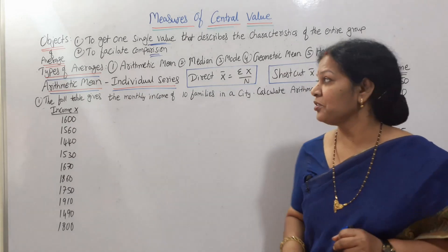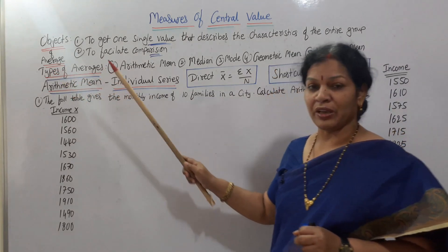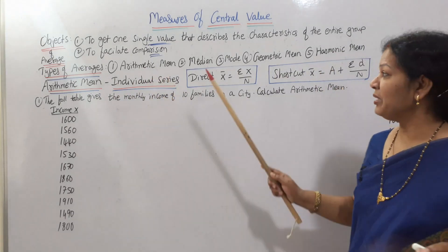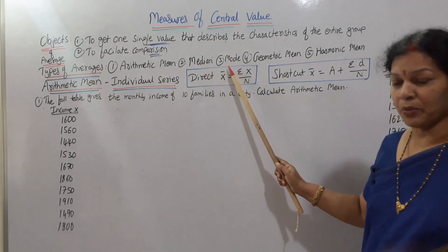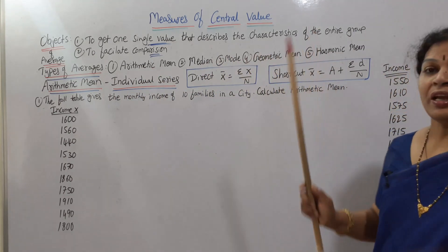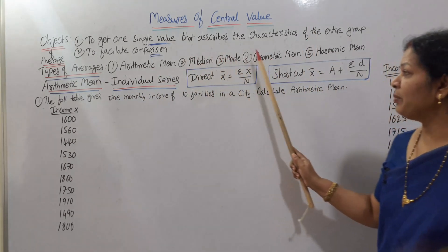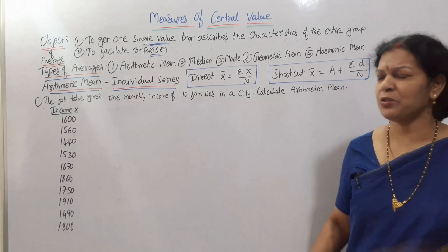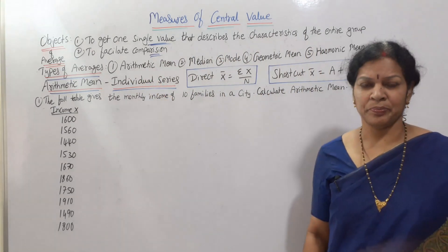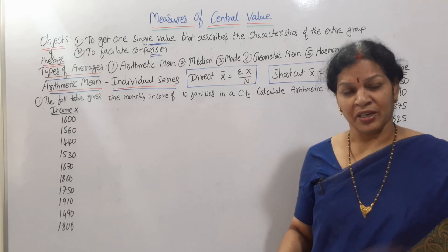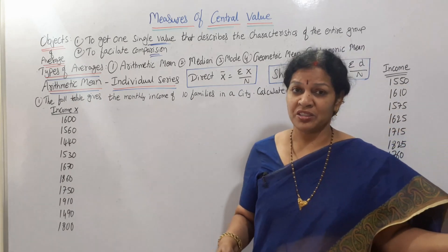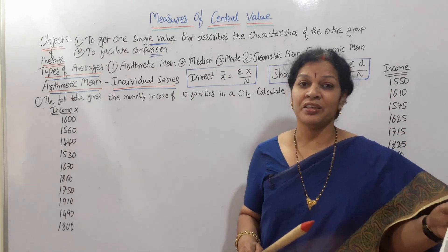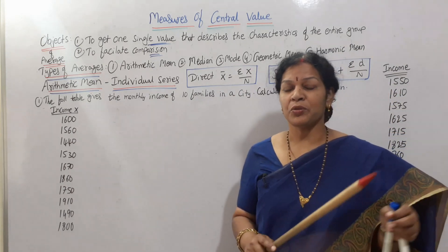There are different kinds of averages — types of averages. One is arithmetic mean, median, mode, geometric mean, and harmonic mean. These are the main types of averages. Let's focus only on arithmetic mean today. We can say it as arithmetic mean, mean, or average — the meaning is the same.